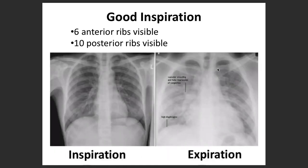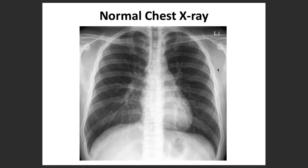For a good inspiration film, you should be able to see six anterior ribs and ten posterior ribs. If it is an expiration film, you may get false impressions about congestion and the diaphragm may appear slightly higher. This can give a false picture, especially in patients undergoing cryo balloon ablation.